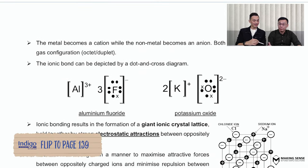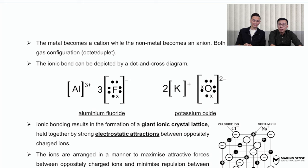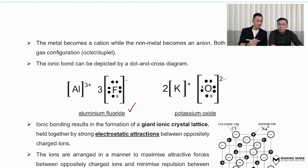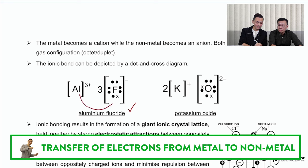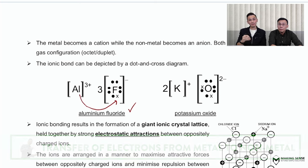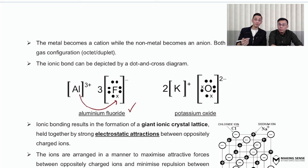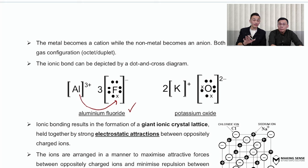Now let's look at the dot and cross diagram, which you are quite familiar with. We'll use aluminium fluoride as an example. What is happening here is a transfer of electrons from the metal towards the non-metal — that's why fluorine becomes an anion. You then combine them together to form an ionic compound. But if you look closely, there are some differences when you move from secondary school to JC dot and cross diagrams.